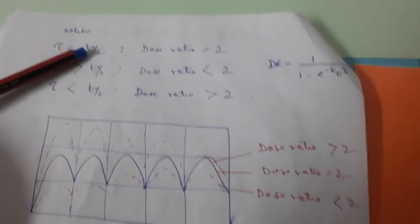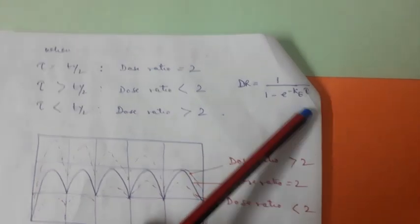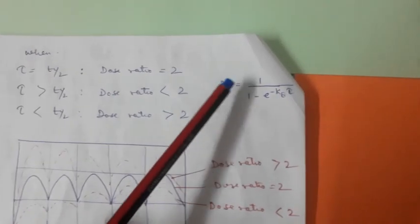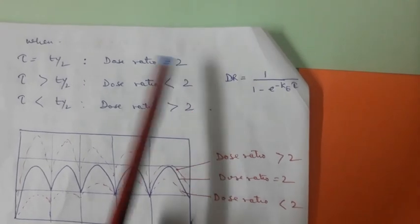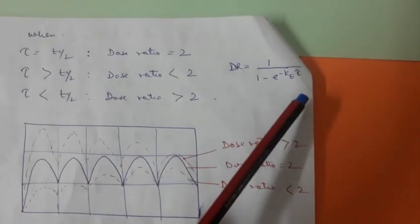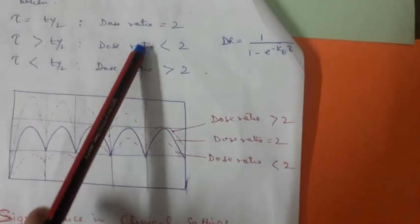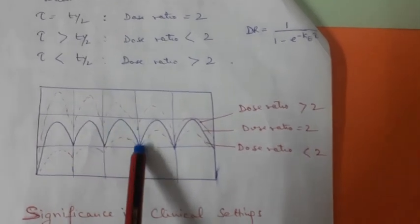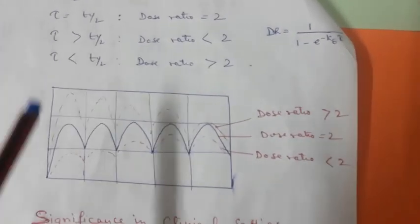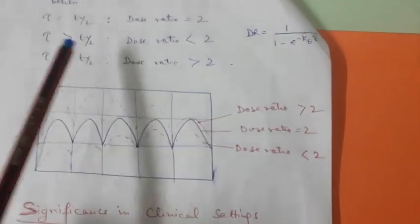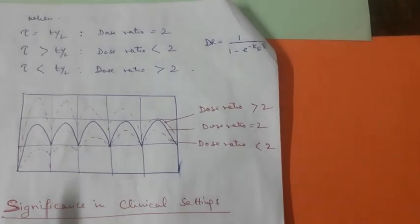When τ is equal to t½, dose ratio is equal to 2. Now when τ is more than t½, dose ratio will be less than 2. When τ is less than t½, dose ratio will be more than 2. Jo blue wala portion hai, that is dose ratio 2 - matlab steady state. Ab dose ratio 2 se zyada, matlab τ < t½ wali condition. Dose ratio 2 se kam, matlab τ > t½ wali condition.